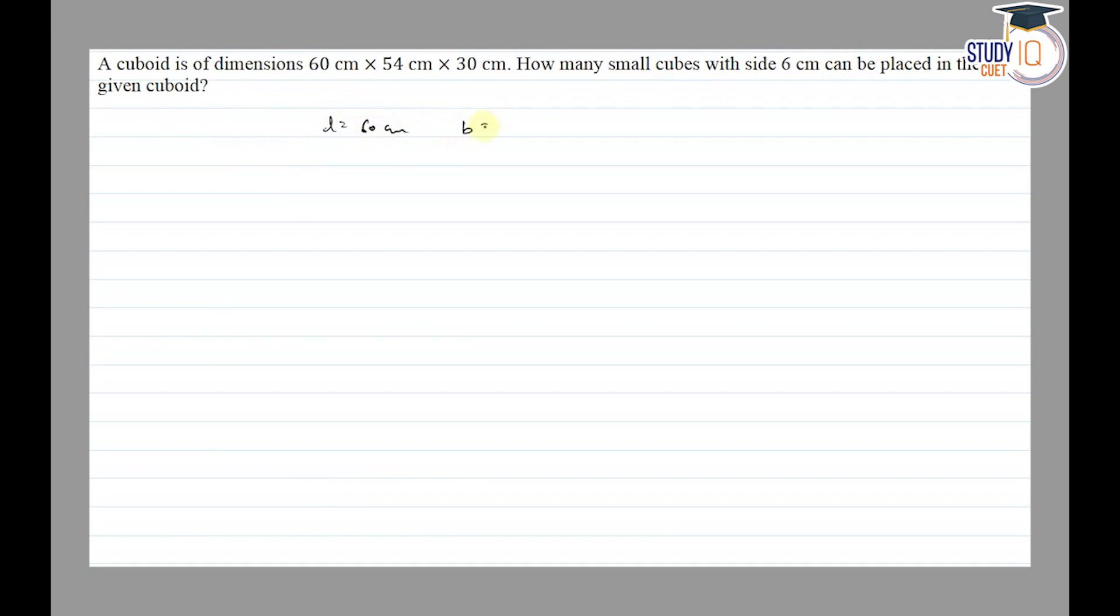So we are given the length of cuboid, breadth of cuboid 54 centimeter, and height of cuboid 30 centimeter. Volume of cuboid is equal to l into b into h, which is equal to 60 into 54 into 30 centimeter cube.